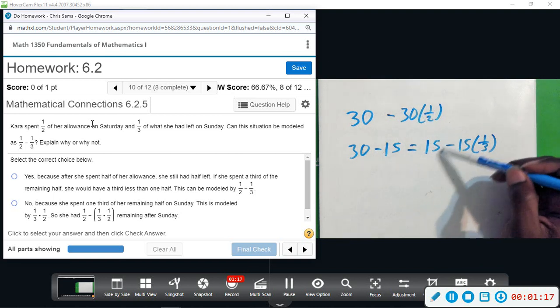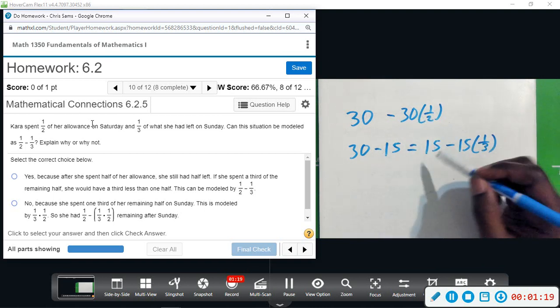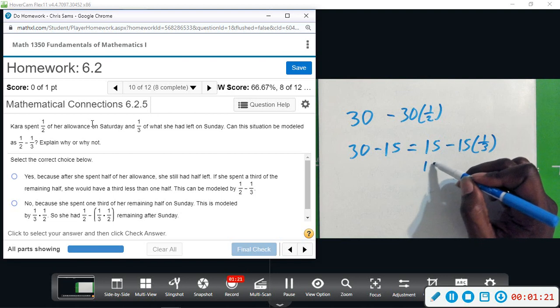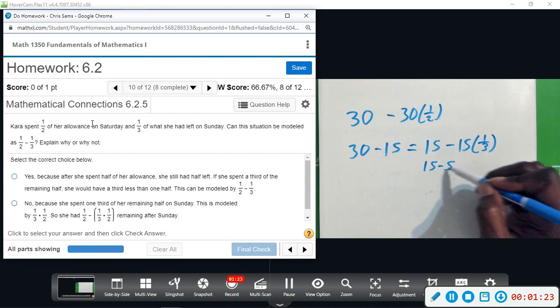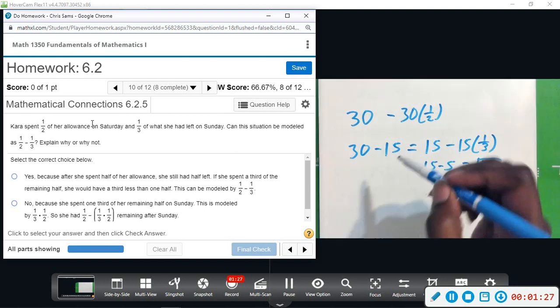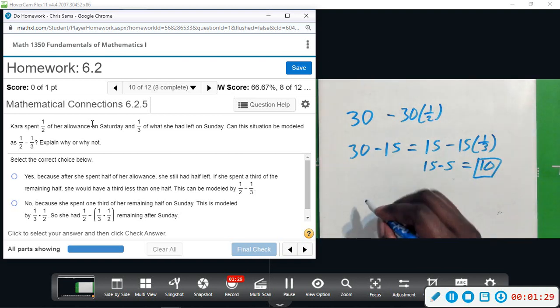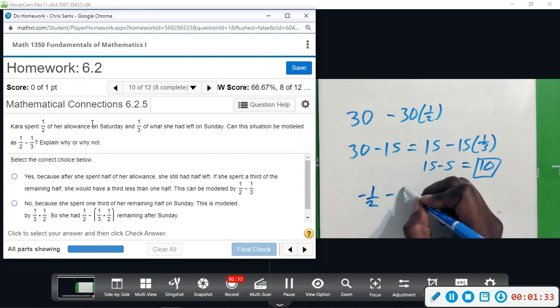money we have, and that's also going to be different for a third. So in this case if we spent 30, we would do fifteen minus five, and that would give her ten dollars left if that was the case. But just subtracting one-half and one-third is not going to do the same thing.